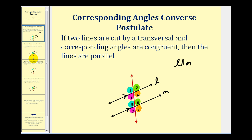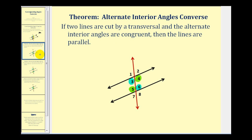Now we'll state the three most common theorems that follow from this postulate. The first is the alternate interior angles converse, which tells us that if two lines are cut by a transversal and the alternate interior angles are congruent, then the lines are parallel. So if angle three is congruent to angle six, or angle four is congruent to angle five, the lines would be parallel. We'll prove this in another video.